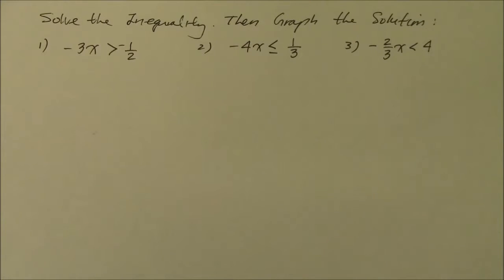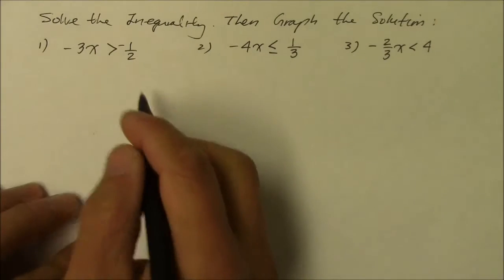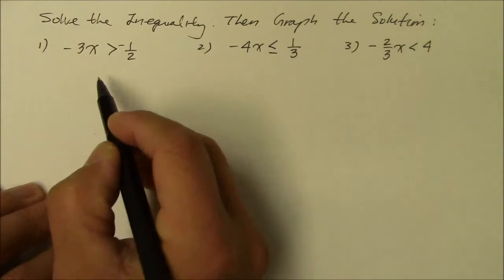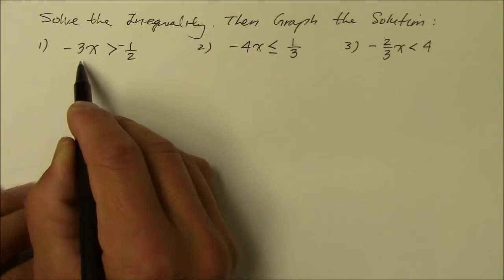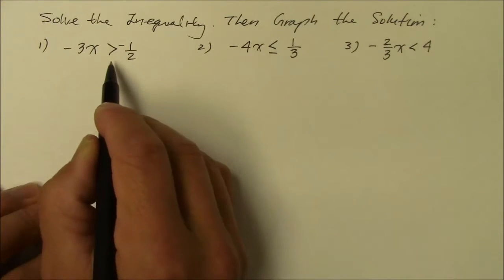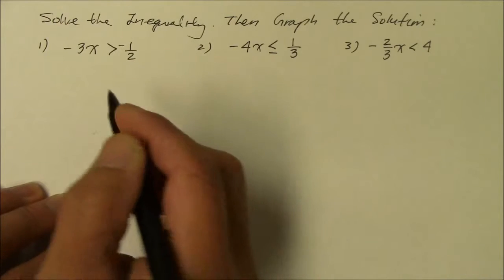Hi. This instructional video is a continuation of solving inequalities. Now here is an example where we have a negative coefficient, which becomes sort of a different animal when we talk about inequality. Let me explain.